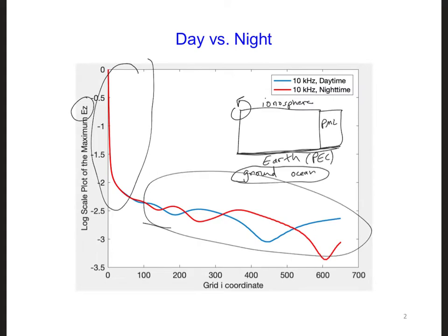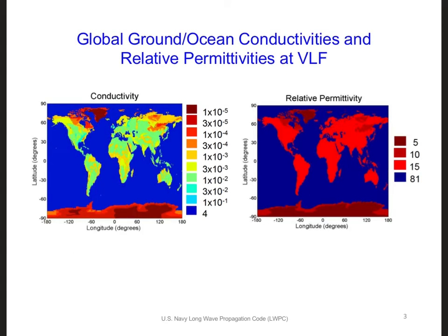So we're going to consider these two along the bottom of our FDTD grid. Here is a plot of the ground and ocean conductivities and relative permittivities around the world at very low frequencies. These values are extracted from the Navy's long wave propagation code, LWPC, which was constructed over many years to try to predict the propagation of VLF waves in the earth-ionosphere waveguide for various applications. Just because there are values everywhere in this map doesn't mean measurements have been conducted everywhere to estimate the ground parameters, so we can expect that some or even many of these values are estimates.